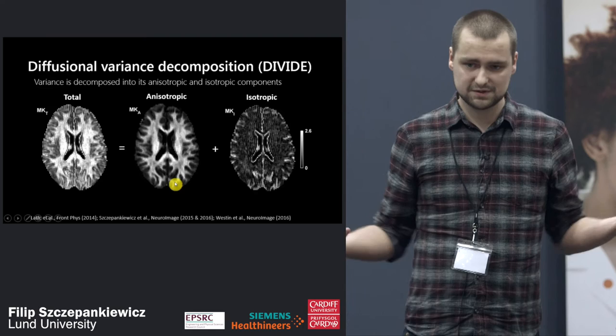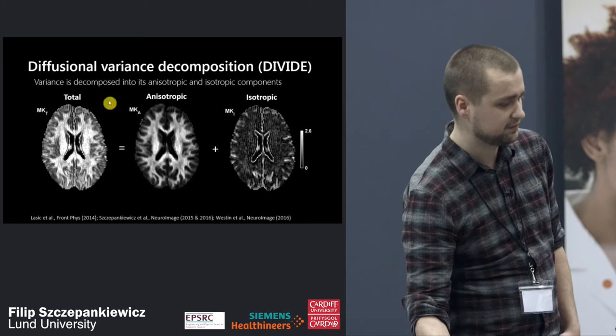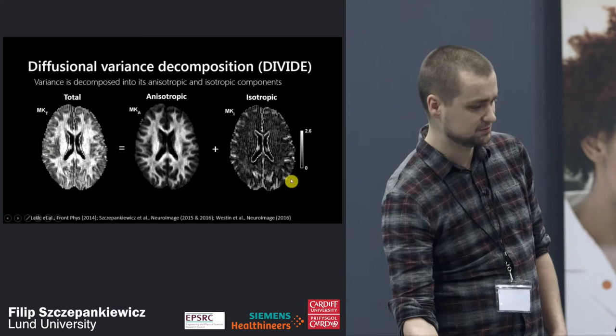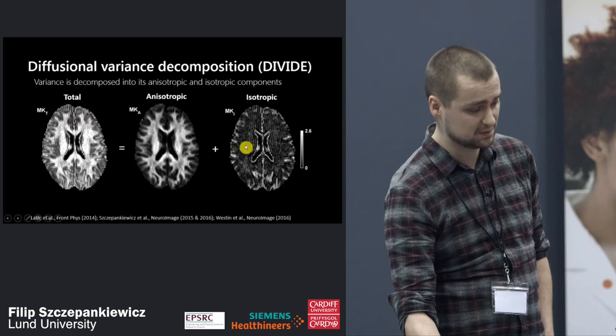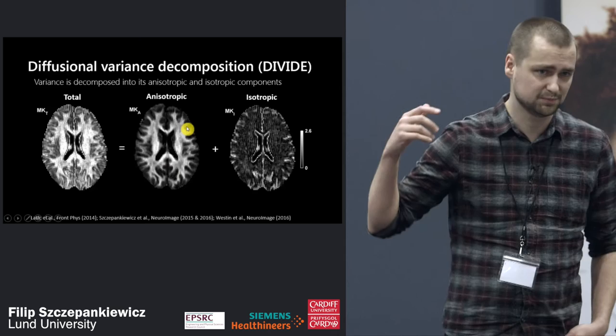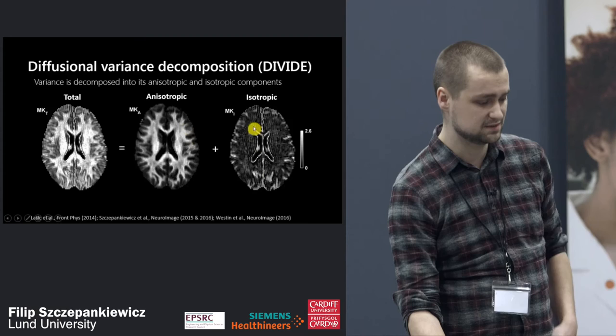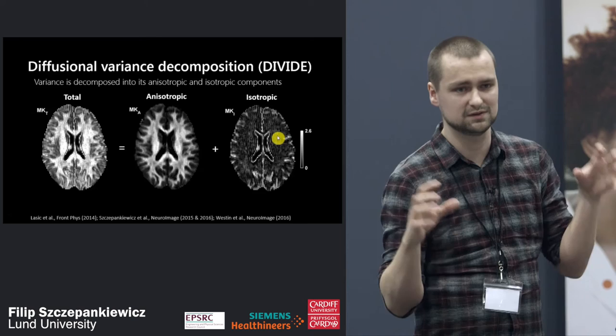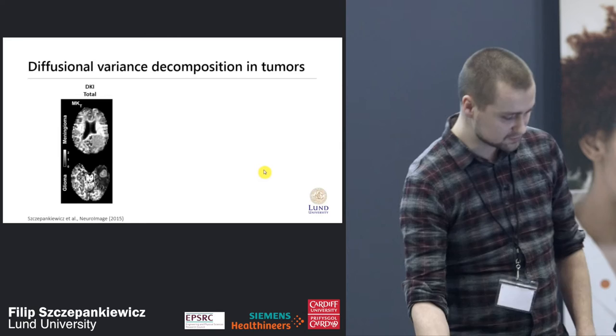We can also separate two types of variance — which we call diffusional variance decomposition. The total variance is very similar to mean kurtosis. But now we can separate it into two components: the total kurtosis or total diffusional variance is just the sum of the anisotropic component and the isotropic component. The anisotropic component appears mostly in white matter as expected, whereas the isotropic component is not zero throughout the brain but is very high in regions with a mixture of tissue and water, where the two types of tensors within the voxel are obviously very different.